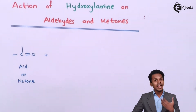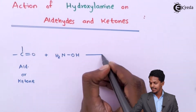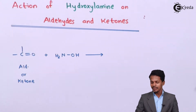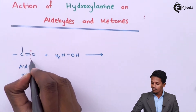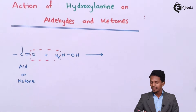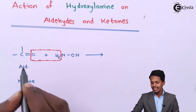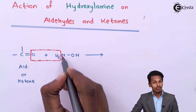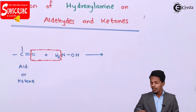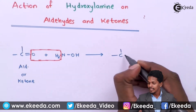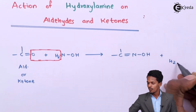Suppose this reacts with hydroxylamine, which is NH₂OH. The reaction proceeds such that the H₂ and the oxygen atom of the aldehyde or ketone are eliminated in the form of H₂O, and the double bond oxygen attaches to the nitrogen. This is therefore known as a condensation reaction, forming a C=N-OH group, with H₂O as the byproduct.